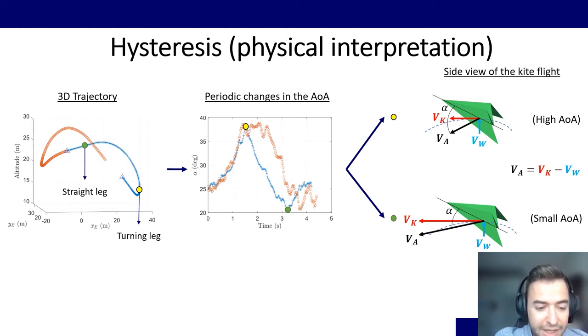Notice that in the turning leg, the kite is flying slower with respect to the ground, and in the straight leg, the velocity is high. Then we plot the angle of attack along the time. We see that there is a periodic shape of the angle of attack that varies from 20 to 40 degrees roughly, which is a lot. And then we try to explain this physically.